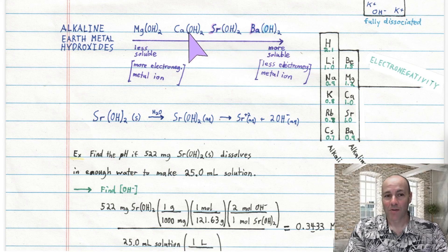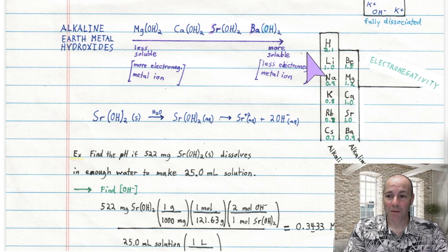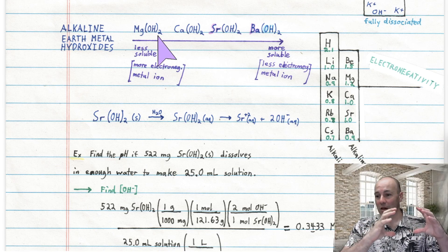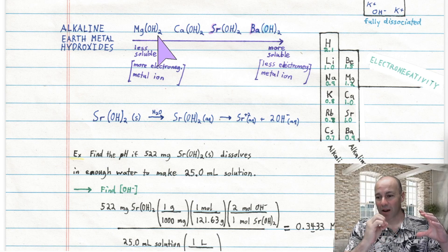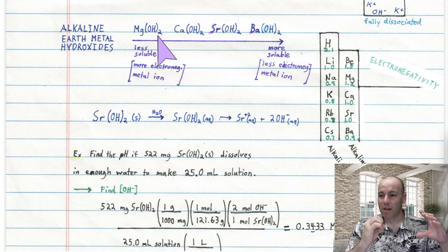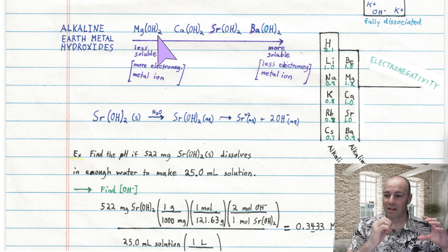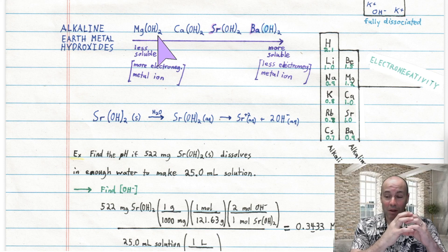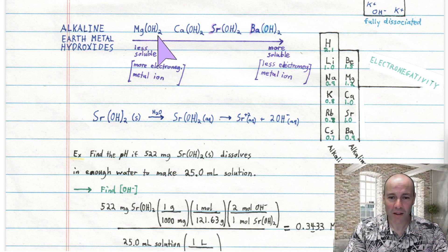Another way to justify the greater solubility going down the column: barium atoms are very big and magnesium atoms are very small — atoms get bigger as you go down the periodic table. With a very large barium ion, hydroxide ions cannot get too close to it because the metal ion is so big. The farther away the negative hydroxide is from the positive ion, the less attracted it is. Larger metal ions don't attract hydroxides as strongly as smaller ones — a plus-two magnesium ion lets hydroxides get really close, so they don't want to leave.